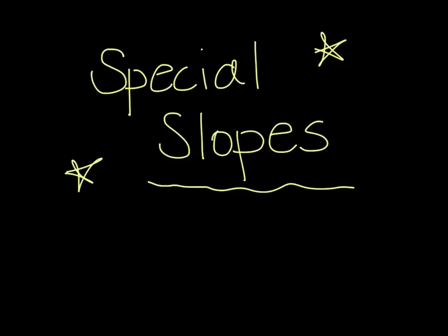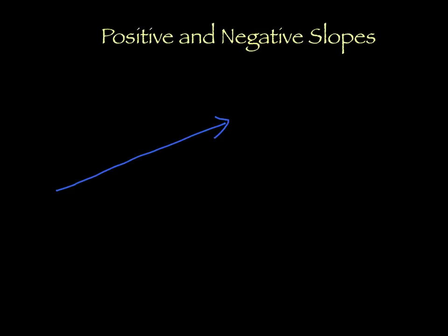This video is going to go over special slopes of different lines. In the last video we only covered positive slopes. Think of it like riding your bike up a hill — you're going uphill, so anytime a line looks like it's going up, it has a positive slope.